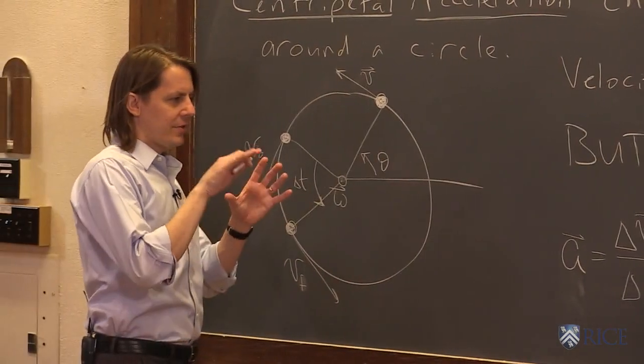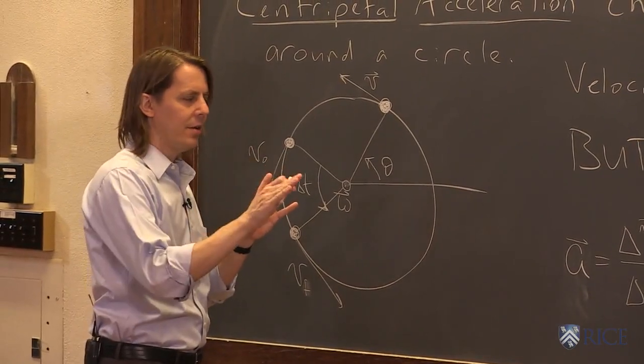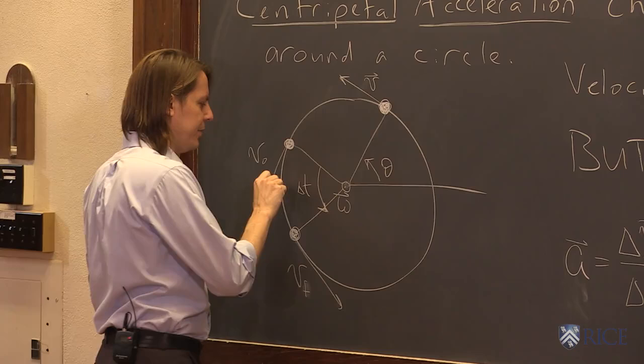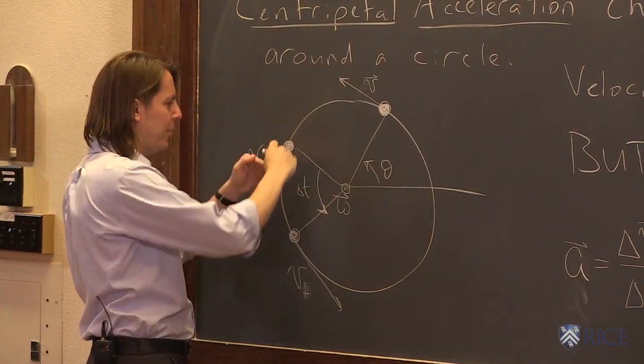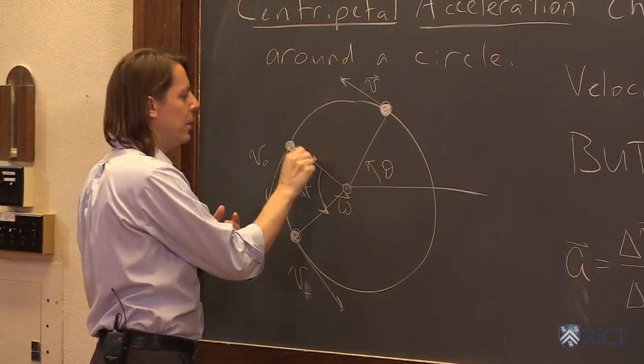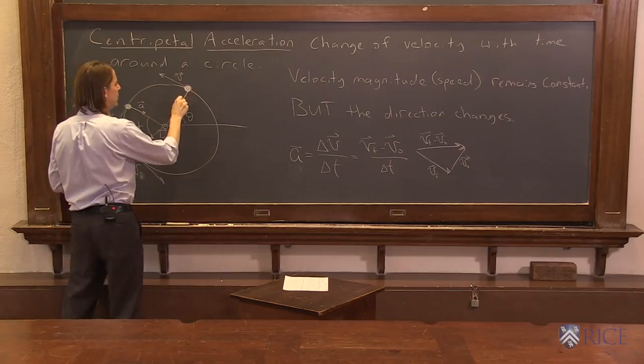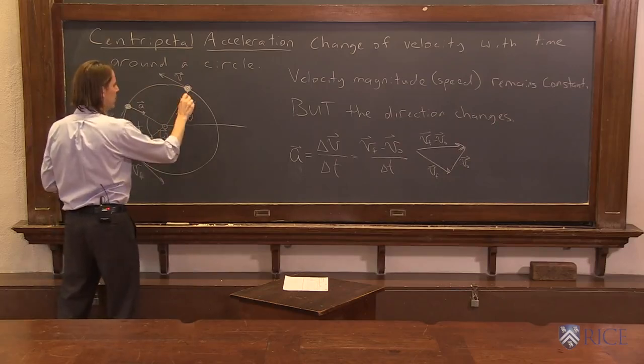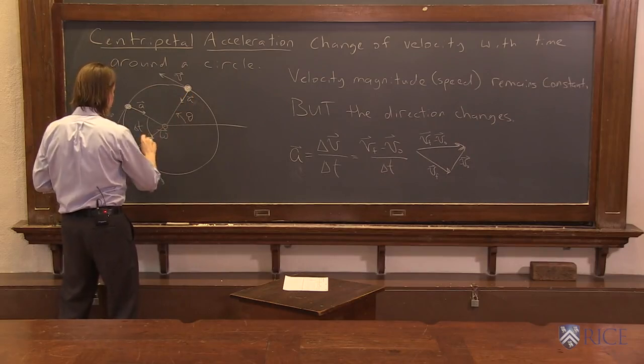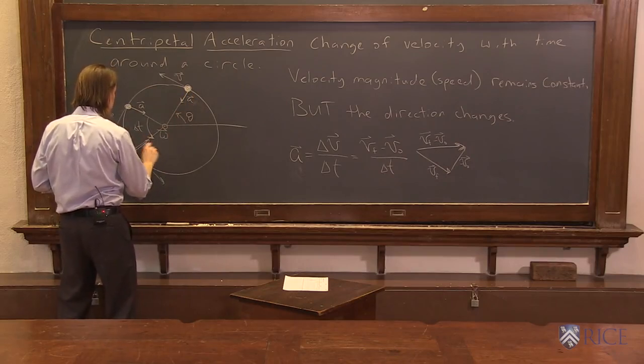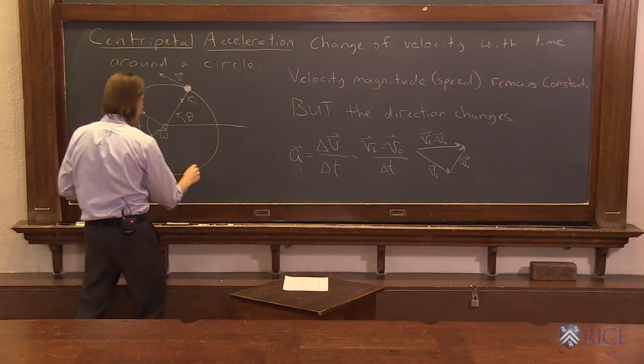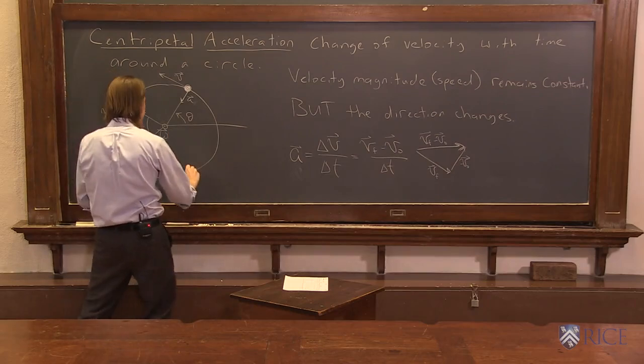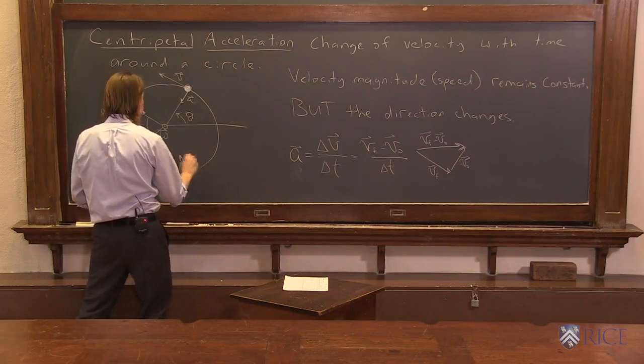So you can see that this acceleration vector points in. It points this way in. And if you do that anywhere, if you make the gap smaller and smaller, you find everywhere you go the acceleration points in. Everywhere you go, acceleration points in. Even if you go here and you did it on either side, you'd find acceleration points in.